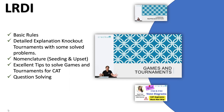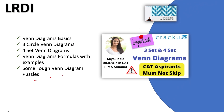Next we have a video on one of the most important topics in LRDI — games and tournaments. This video covers the basic rules of games and tournaments, detailed explanation, knockout tournaments with solved problems, nomenclature, seeding and upset, excellent tips to solve games and tournaments for CAT, and finally question solving. Next, one of the best videos every aspirant must watch is a detailed concept video on Venn diagrams, covering Venn diagram basics, 3-circle Venn diagrams, 4-set Venn diagrams, Venn diagram formulas with examples, and some tough Venn diagram puzzles. These are some of the best resources for better conceptual understanding of the LRDI section of CAT.